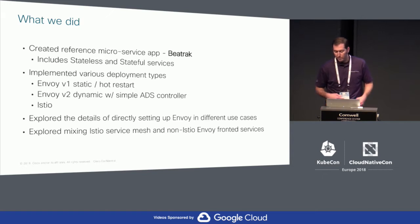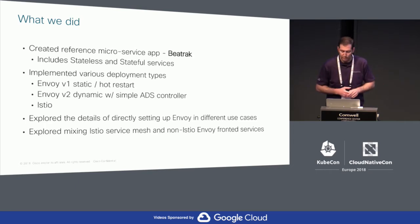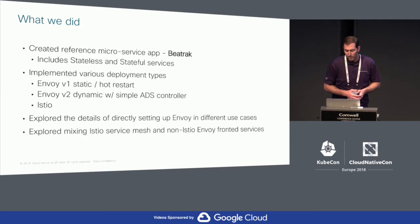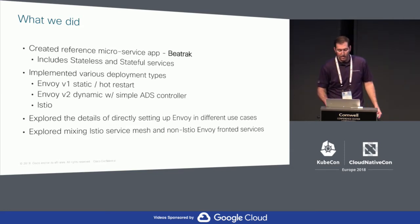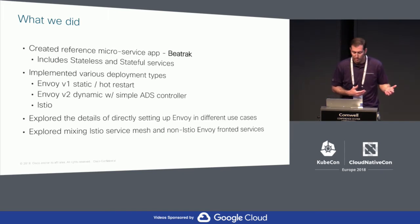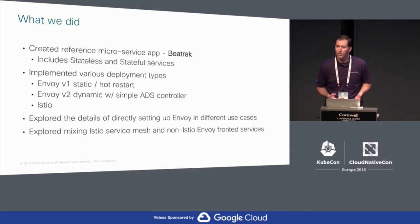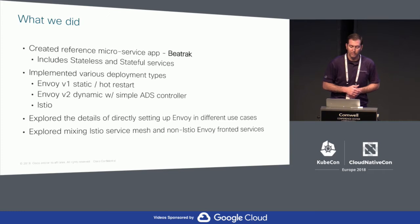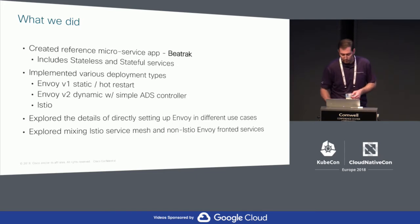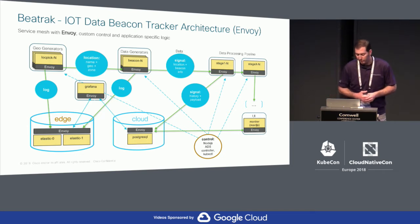The deployment implementations for B-Track allow us to explore data plane features for Envoy and various placement setups of Envoy — whether we have one Envoy instance in front of two application instances. We were also able to mix Istio service mesh deployments with non-Istio Envoy-fronted services. The application serves as an example of all of these types of things, and we have branches in the repo with all the scripts and configurations for doing this work.